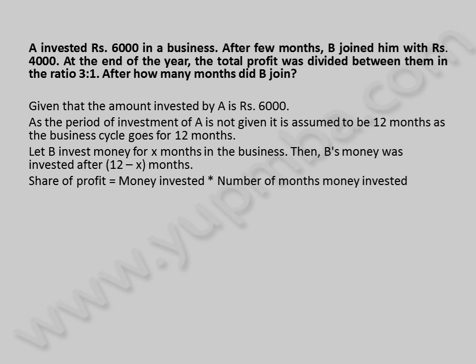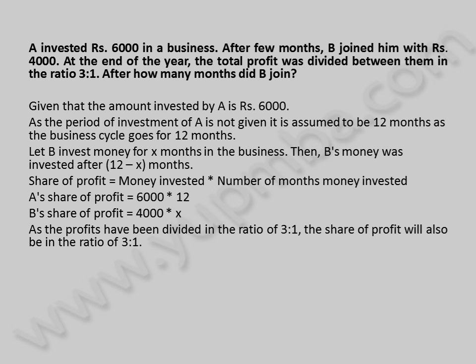Share of profit is equal to money invested multiplied by number of months invested. A's share of profit is equal to 6,000 into 12. B's share of profit is equal to 4,000 into X. As the profits have been divided in the ratio of 3 is to 1, the share of profit will also be in the ratio of 3 is to 1.